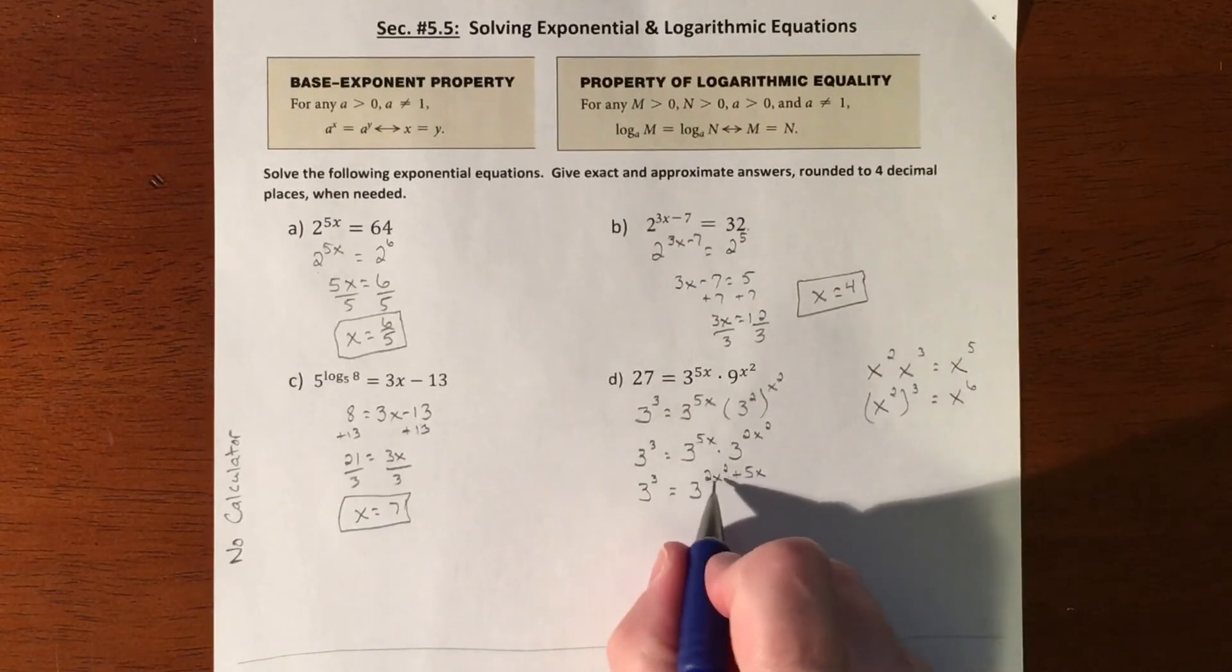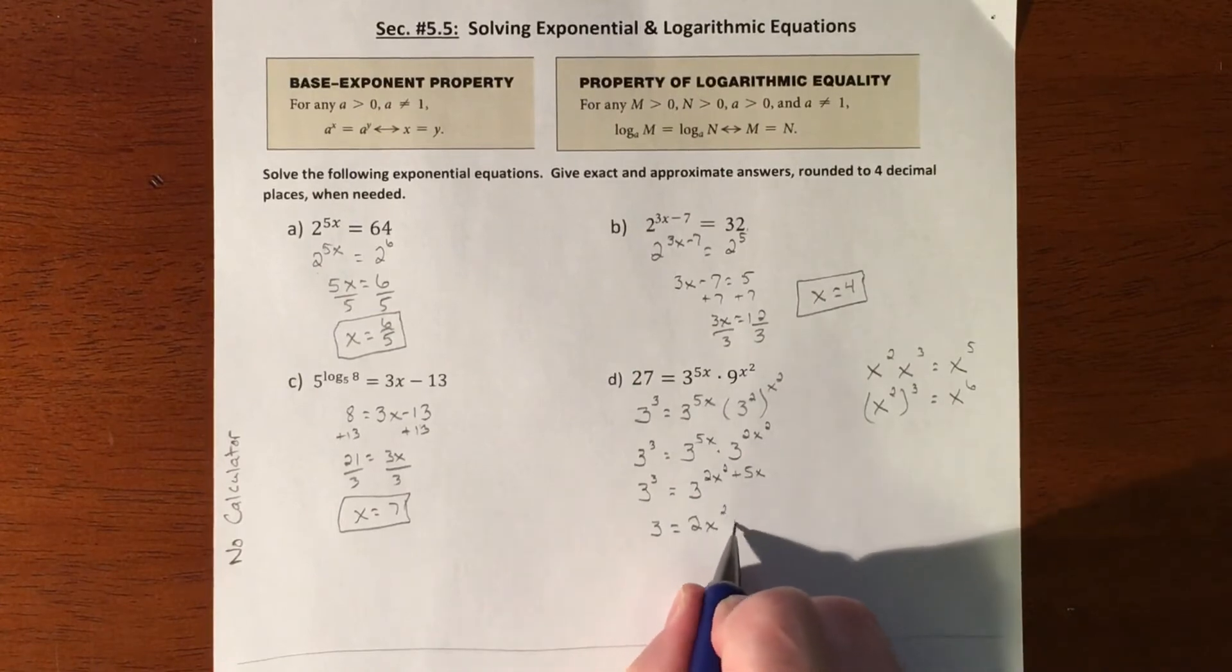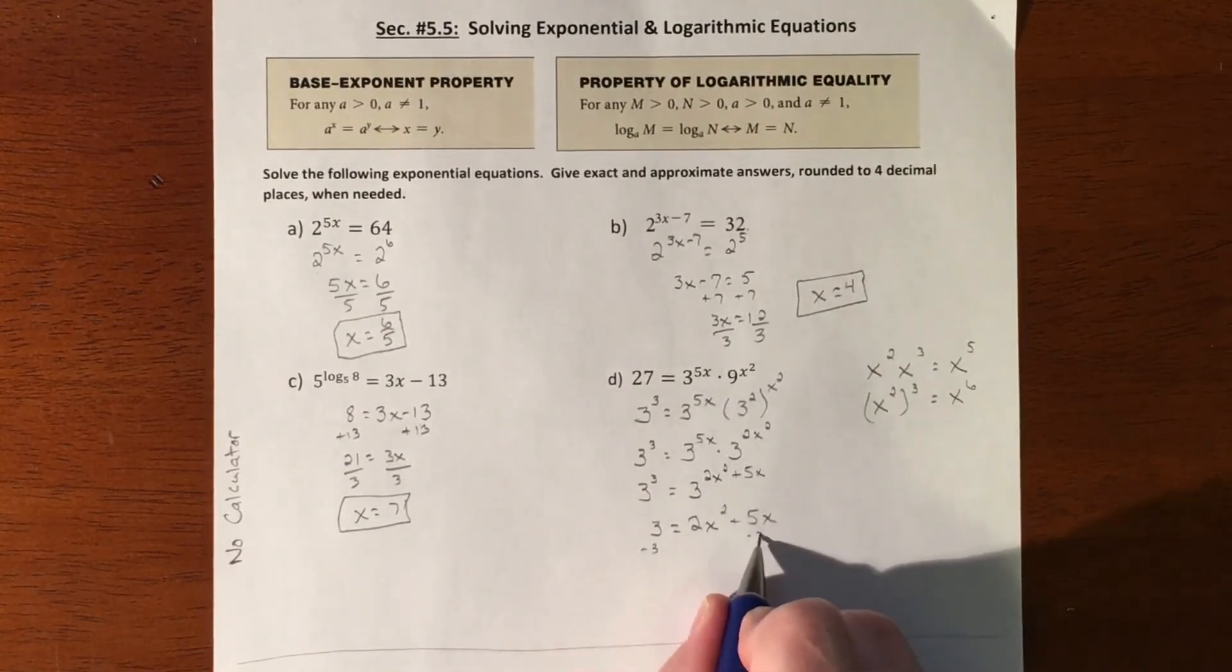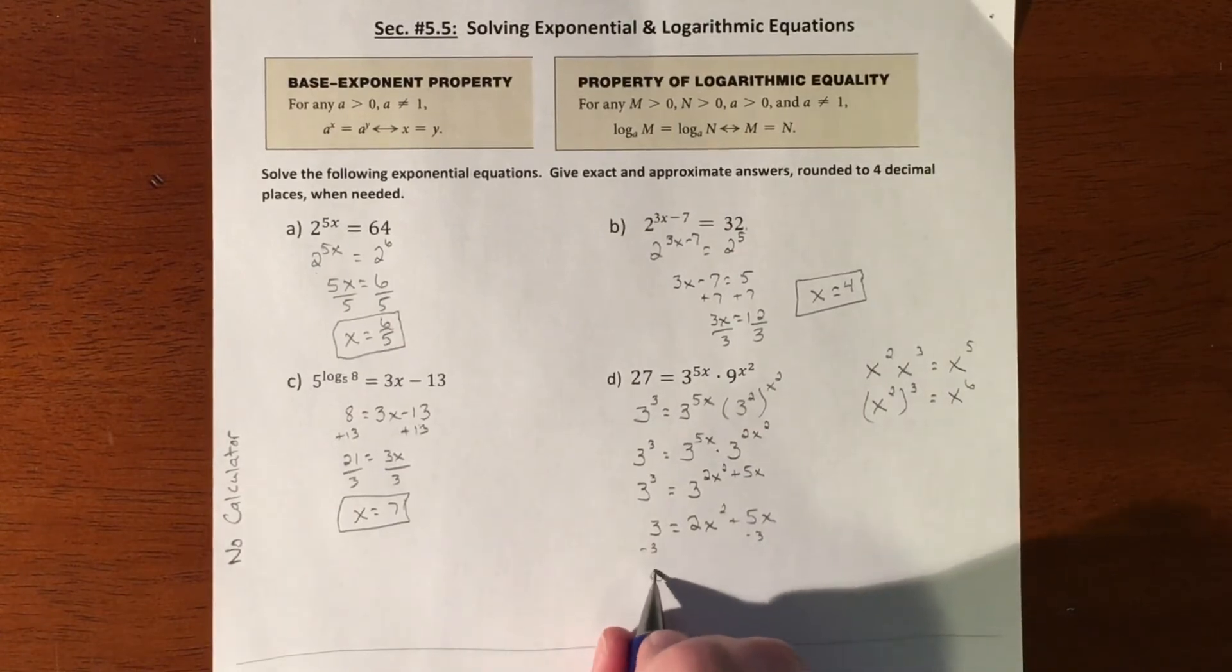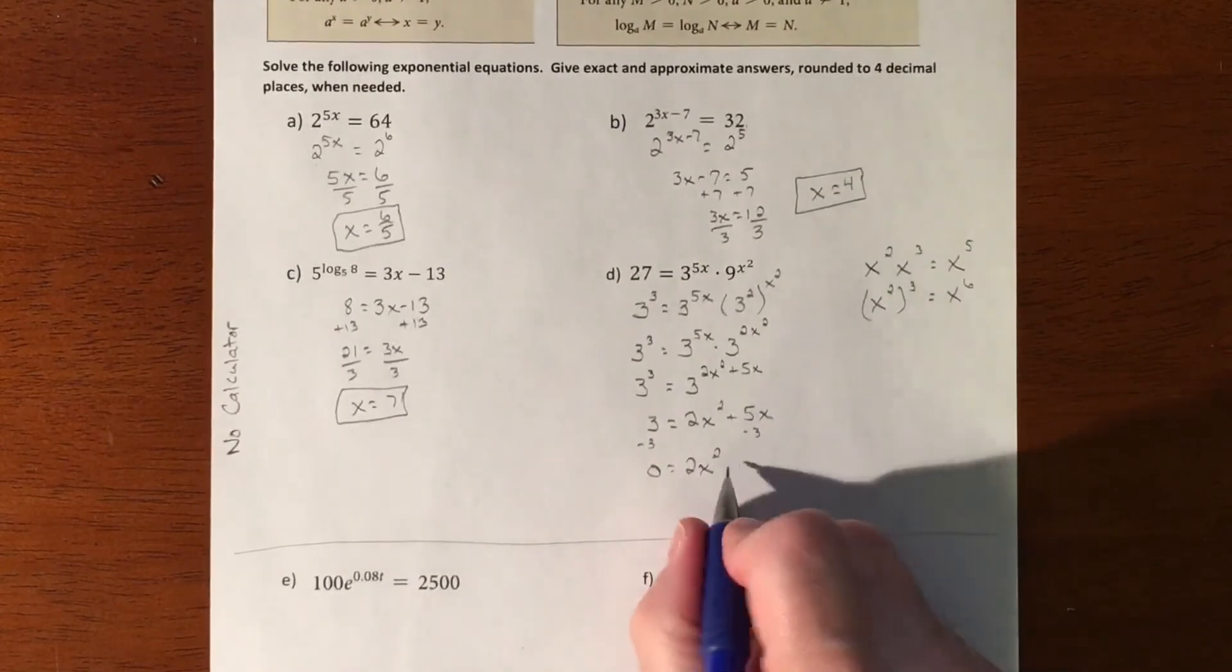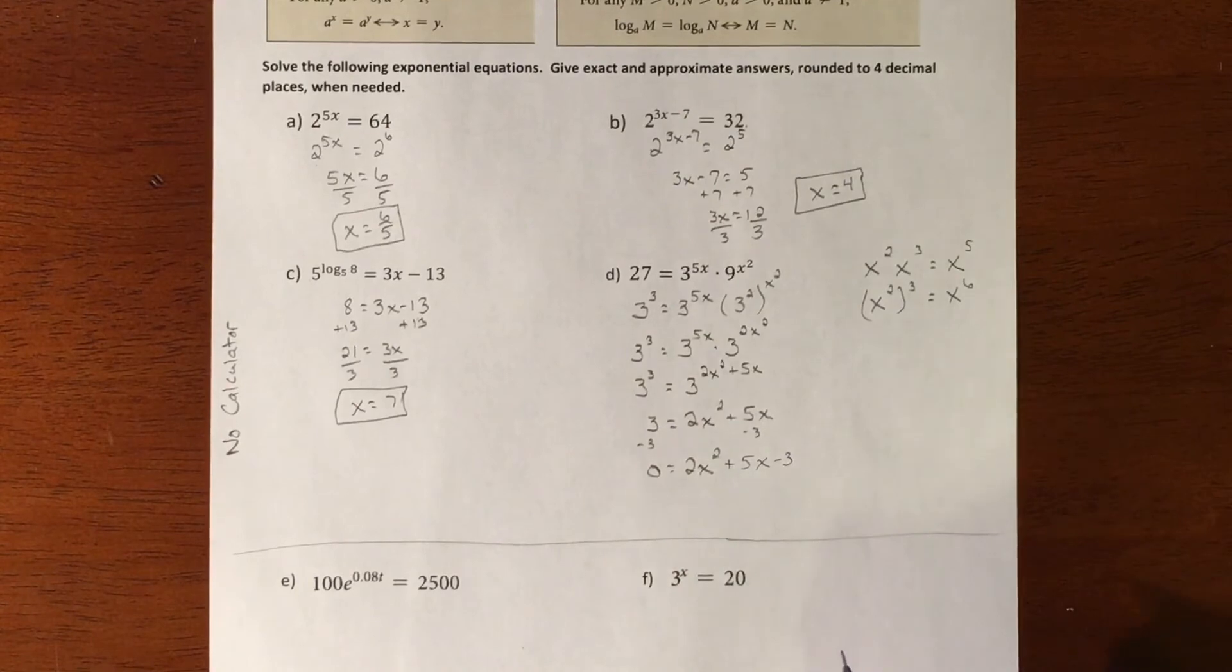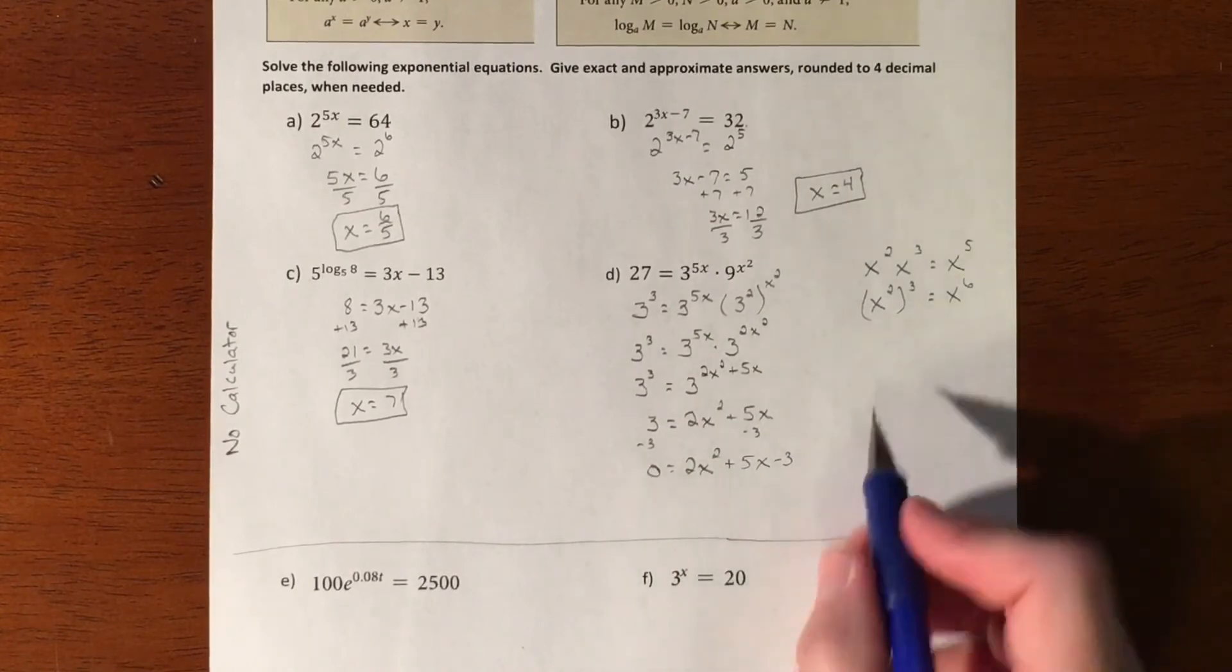All right, so now we add our exponents together. Bases match, now we have just a more complicated version of this. So we're going to have 3 is going to equal 2x squared plus 5x. We'll subtract the 3 over, so we're looking at 0 equaling 2x squared plus 5x minus 3. So we have a quadratic.